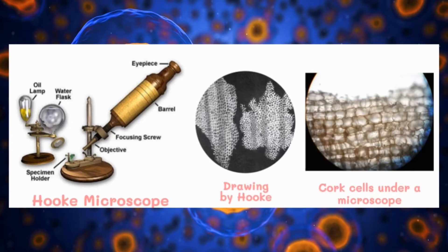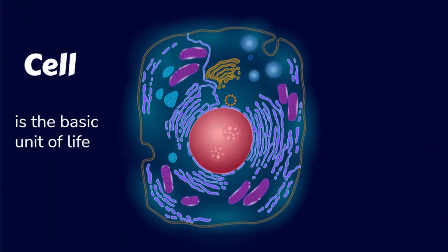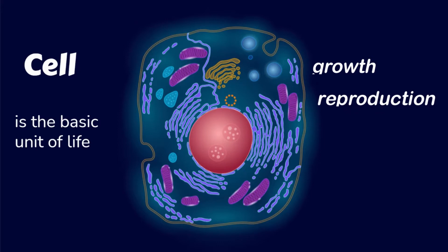A cell is made up of tiny organs called organelles that perform specific functions. The cell is the basic unit of life that can perform all activities associated with life like growth, reproduction, excretion, and nutrition. They were called organelles because they are like little organs that each have their own function.